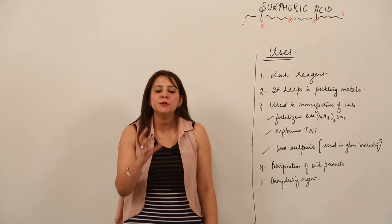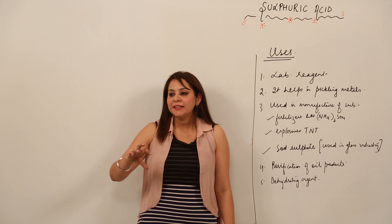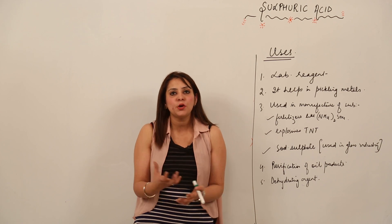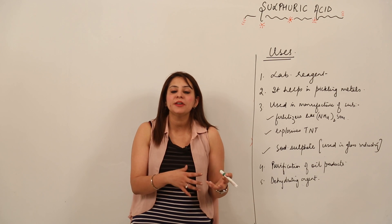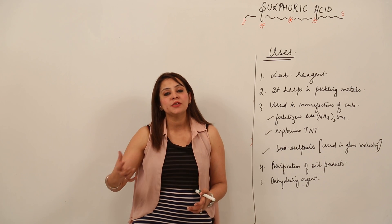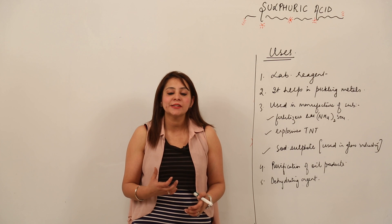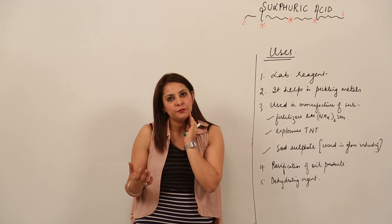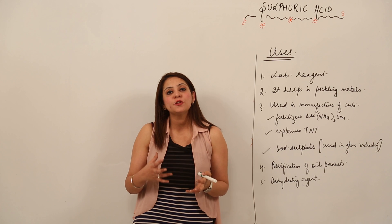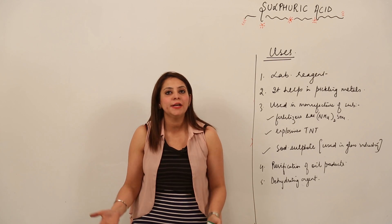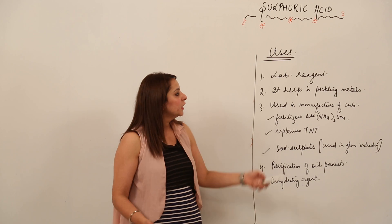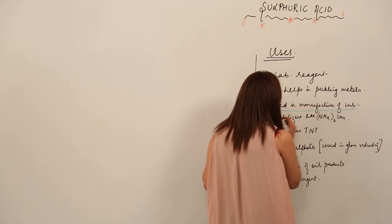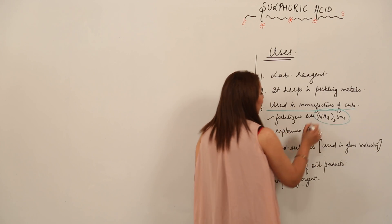Second, it helps in the pickling of metals. What is pickling of metals? It means wherever there is a metallic impurity present, sulfuric acid can be easily used, because metals react readily with sulfuric acid. So it helps in removing metallic impurities wherever they are present.